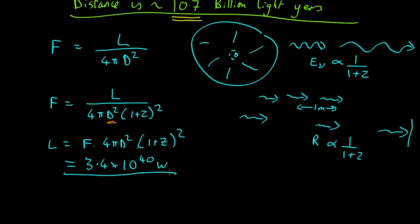Which is a very, very big number. Of course, astronomy is full of big numbers. We can give it a bit of perspective by comparing it to the luminosity of the sun. The luminosity of the sun is 3.8 by 10 to the 26 watts. So, this luminosity of this particular quasar is about 10 to the 14 times the brightness of the sun.